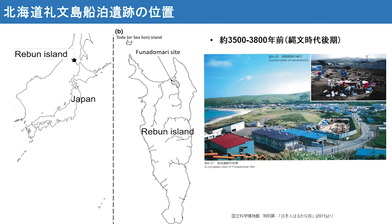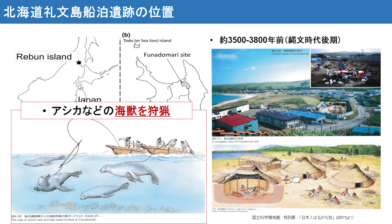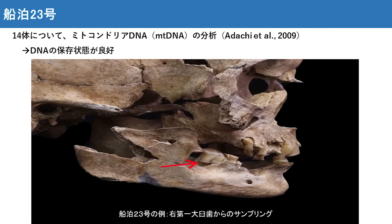昨年2019年に我々のグループは北海道のレブン島にある船泊遺跡から出土した人骨のゲノム分析を行い、非常に良好な結果を得ることができました。人骨の年代分析からおよそ3500から3800年前の縄文時代後期の人骨であることが分かっています。人骨に加えてアシカなどの海獣類の骨やそれを使用するための道具が検出されており、彼らはアシカなどの海獣類を食べていたことが分かります。